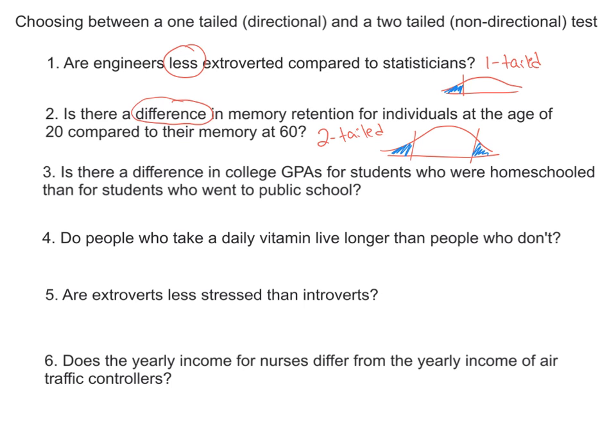Number three: Is there a difference in college GPAs for students who were homeschooled and for students who went to public school? Again, here we have the word 'difference.' Another way you can have a two-tailed test like this is something like: does homeschooling have an effect on college GPAs? An effect could be a good effect or a poor effect. So again, 'difference' is going to tip you off — that's going to be a two-tailed test.